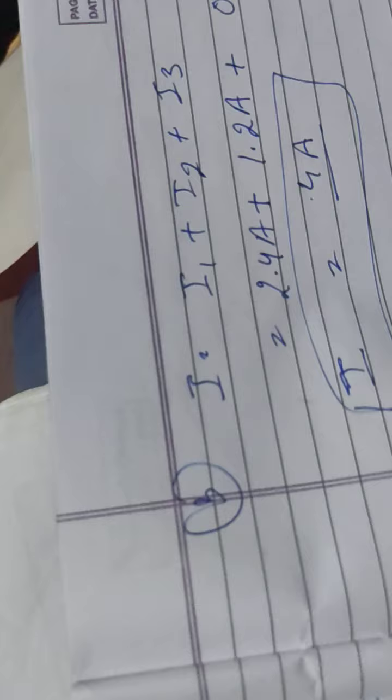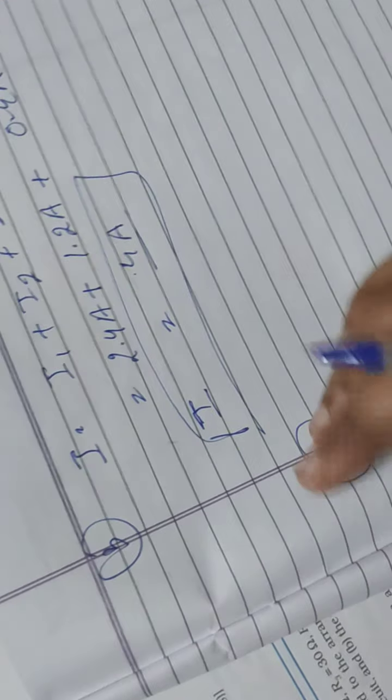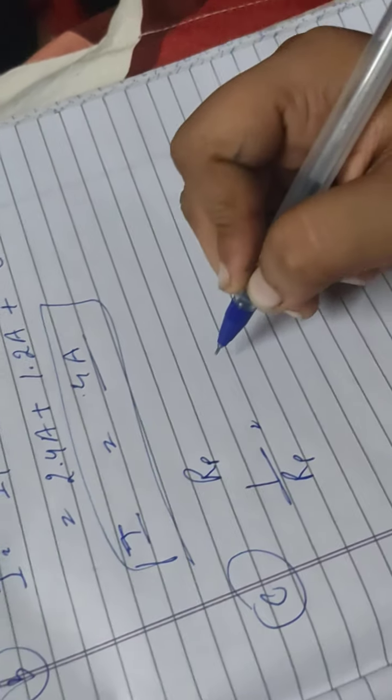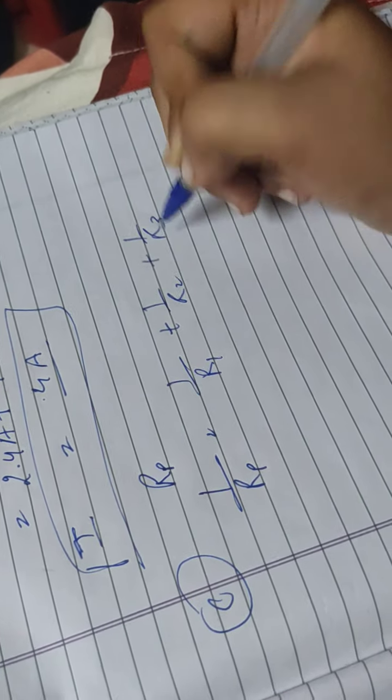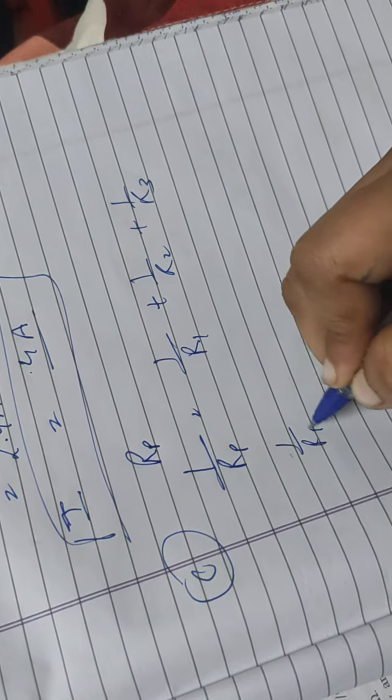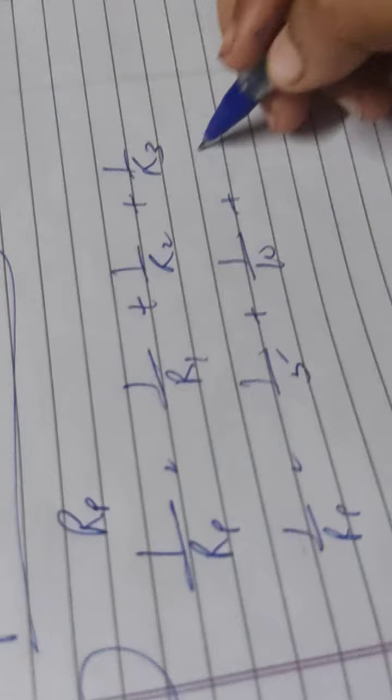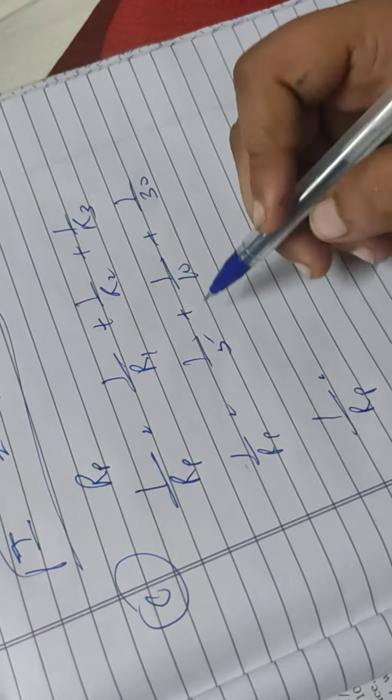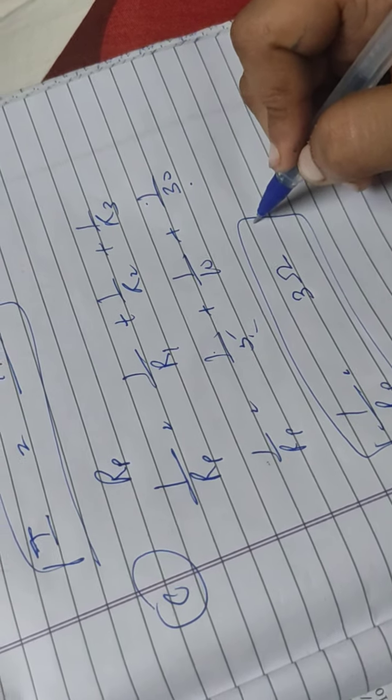Now part C, the total circuit resistance means we have to find Rp. So the formula for Rp is 1 by Rp is equal to 1 by R1 plus 1 by R2 plus 1 by R3. So 1 by Rp, 1 by R1 value is 5, R2 value is 10, R3 is 30. Then take LCM of these, solve and you will get the answer that is 3.